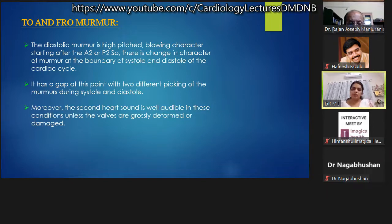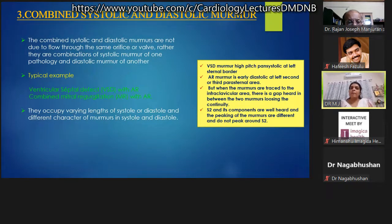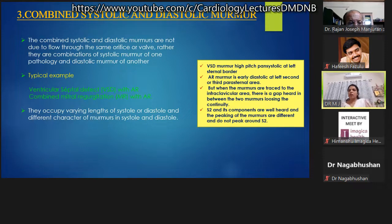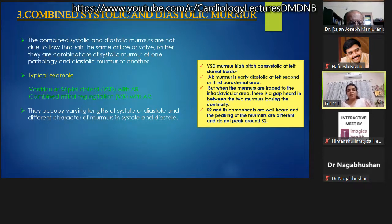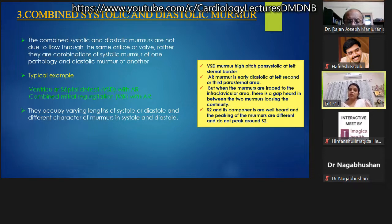Combined systolic-diastolic murmurs are not due to flow through the same orifice, but are a combination of a systolic murmur from one pathology and a diastolic murmur from another. They may arise from different orifices or valves. Typical examples include VSD with aortic regurgitation and combined MR with AR. They occupy varying lengths of systole or diastole and differ in character.